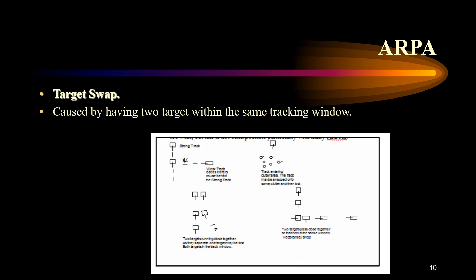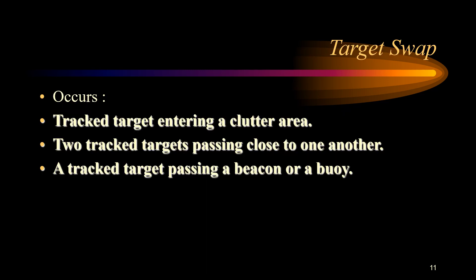Target swap occurs when two targets are within the one tracking window. Various scenarios can bring about target swap, including a tracked target entering a cluttered area, two tracked targets passing close to one another, or a tracked target passing a beacon or buoy causing confusion as to whether they are one or two targets. The effect of a target swap is often unpredictable — the tracked target may lose its vector or, more commonly, show an incorrect vector. Another effect is that the vectors swap on the two tracked targets, giving wrong information about each.